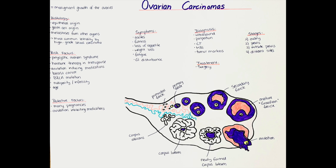When a mature follicle, also called a Graafian follicle, is formed, the luteinizing hormone increases and weakens the wall of the ovary, resulting in the oocyte being released. The granulosa and theca cells remain in the ovary and form what we call the corpus luteum, which by luteinizing hormone stimulation produces progesterone. For around 10 days the corpus luteum produces progesterone to prepare the endometrial lining for implantation. If after around 10 days there is no implantation, the corpus luteum stops producing progesterone and begins degenerating, causing the endometrial lining to slough off.